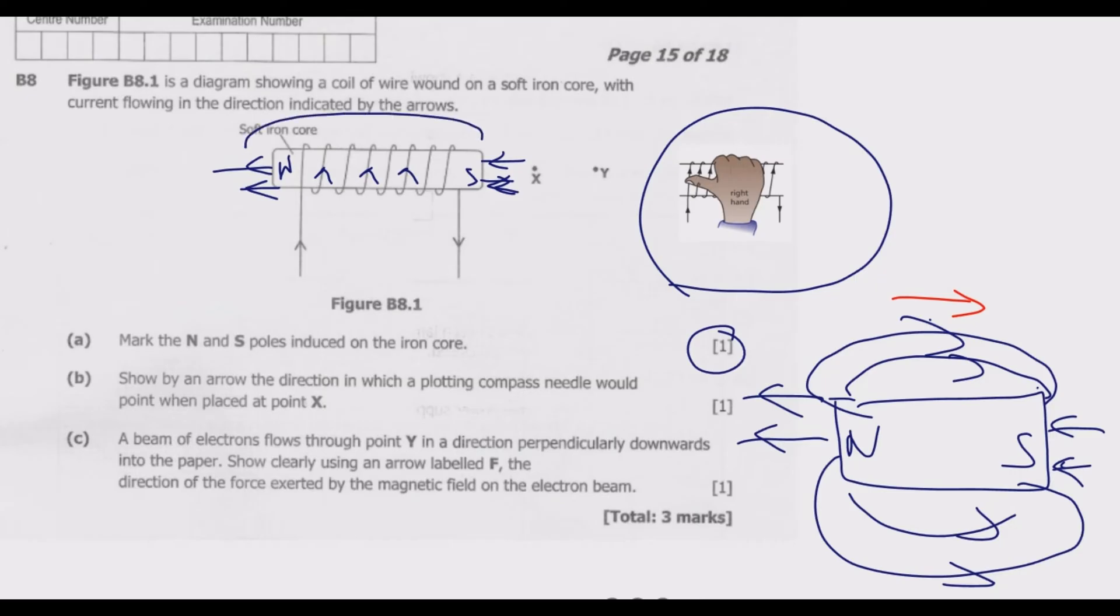They are going back to south like in this direction. So if you place a compass needle there, it will basically point in the direction of the magnetic field. It will point where we've pointed with lead ink. This is how you get this one mark.